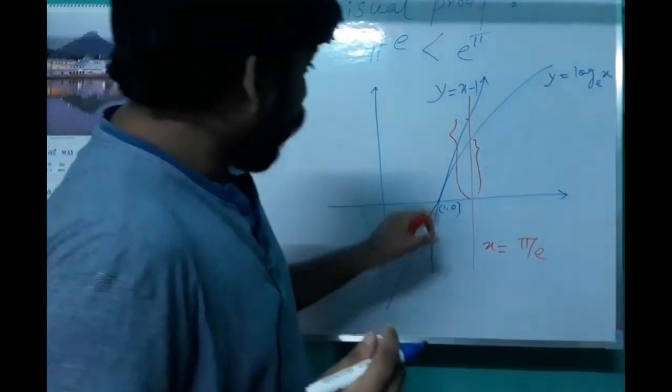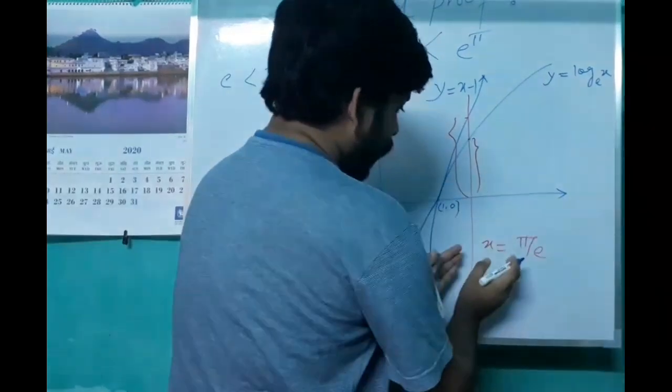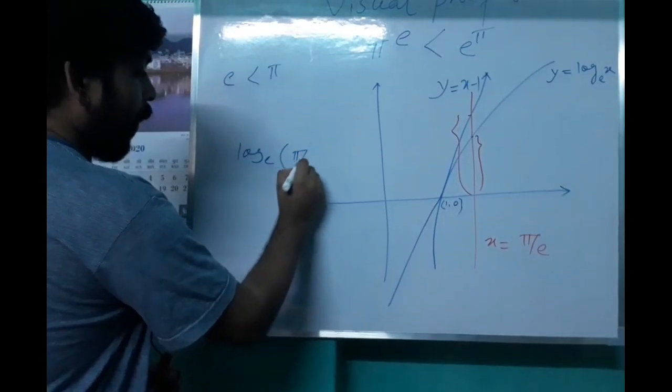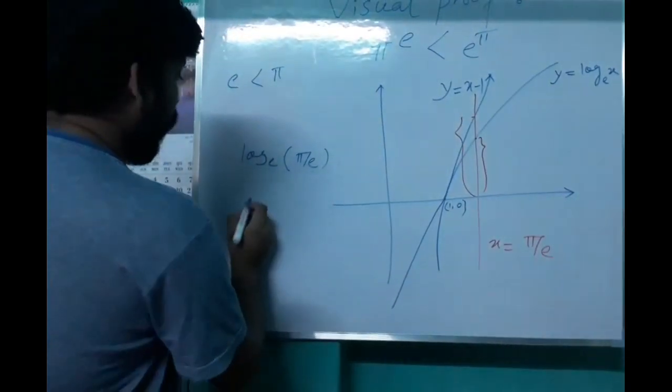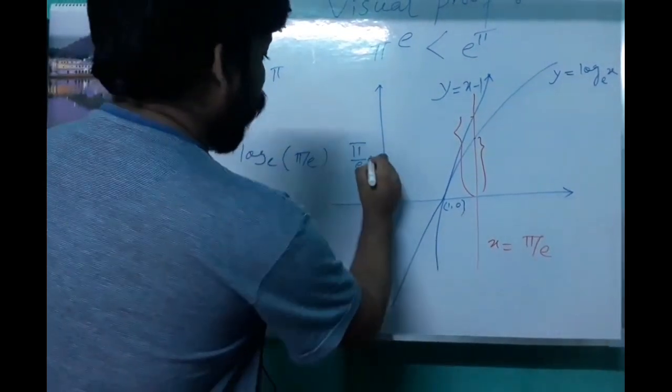So this length is actually log pi by e. And this length is actually pi by e minus 1.